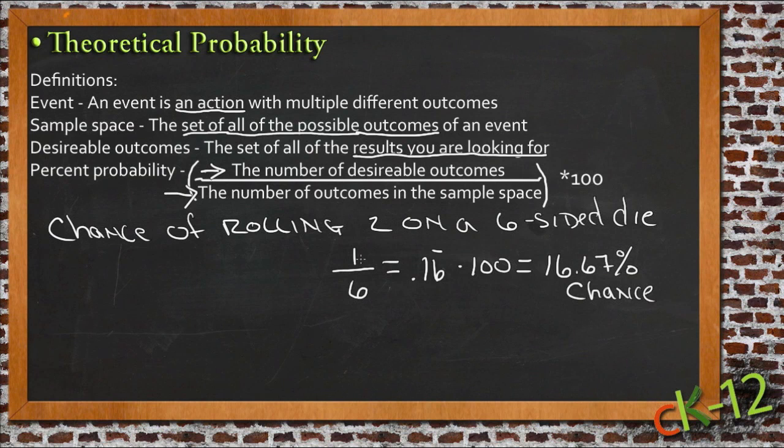So just take the total number of desirable possibilities, divide it by the total number of possibilities there are altogether, and then once you get that decimal, multiply it by 100, make it into a percentage, that will give you your theoretical probability.